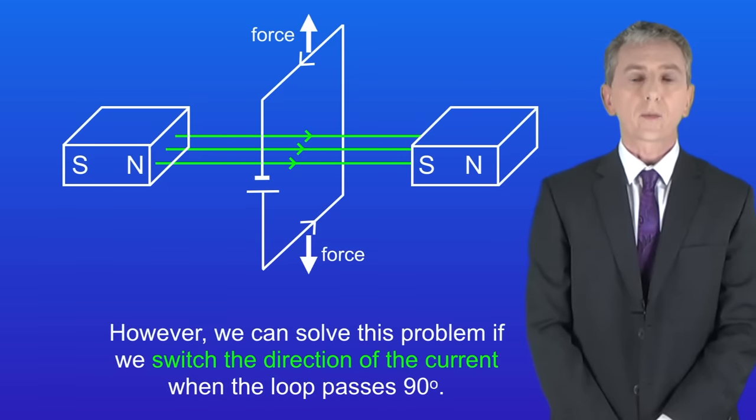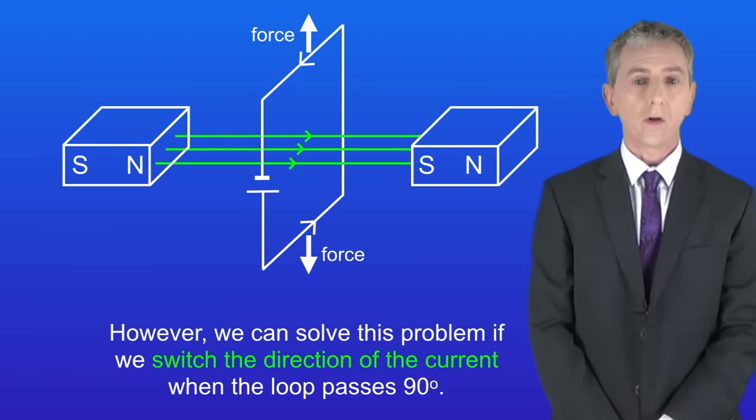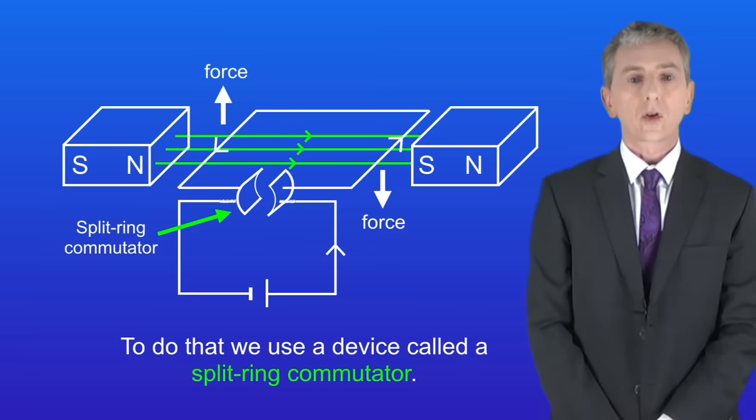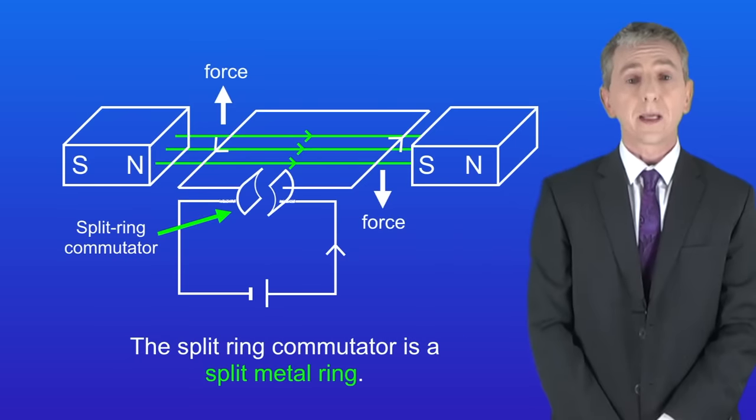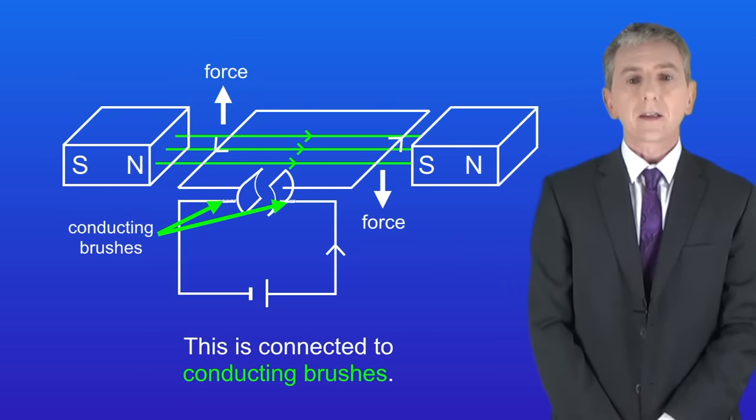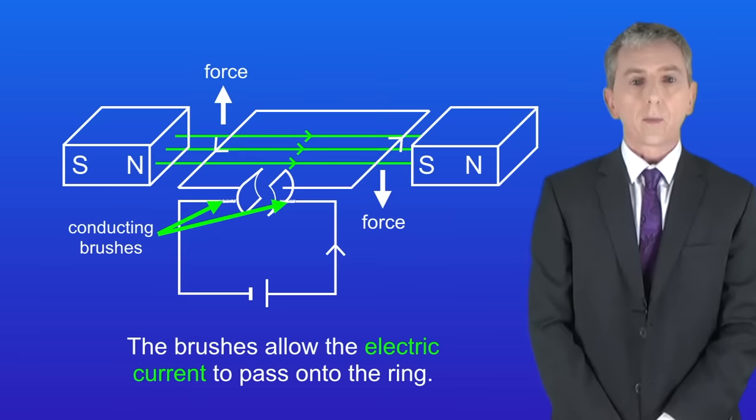However we can solve this problem if we switch the direction of the current when the loop passes 90 degrees. To do that we use a device called a split ring commutator. The split ring commutator is a split metal ring connected to conducting brushes. The brushes allow the electric current to pass onto the ring.